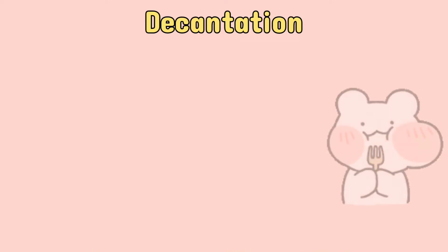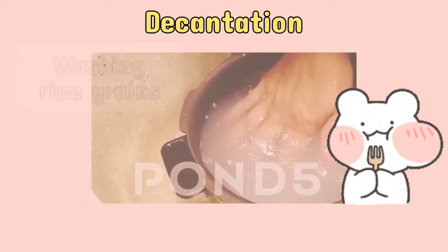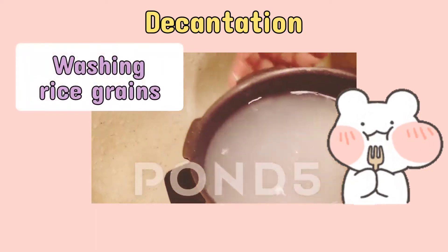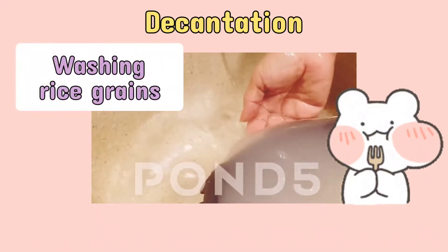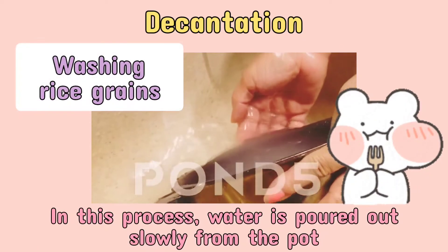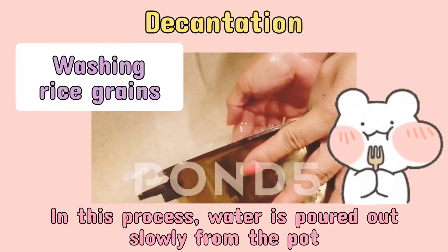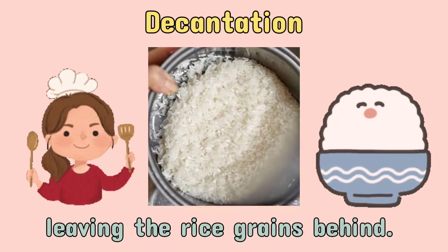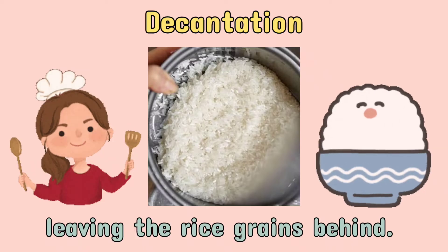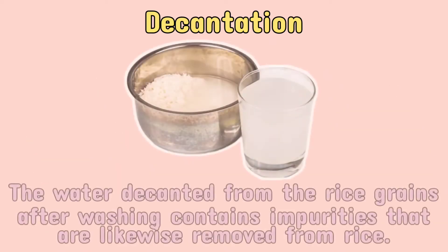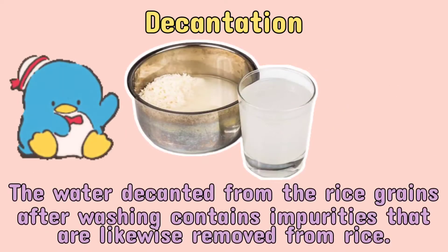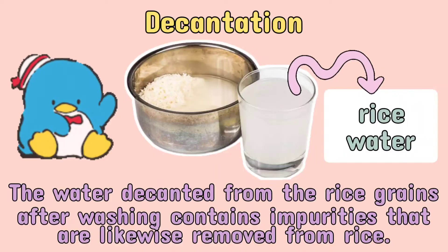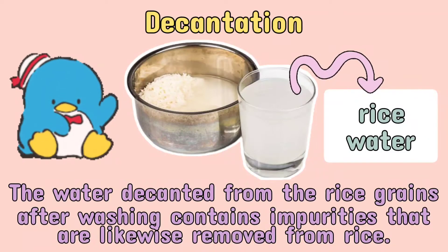Decantation is also applied when washing rice grains before cooking. In this process, water is poured out slowly from the pot, leaving the rice grains behind. The water decanted from the rice grains after washing contains impurities that are likewise removed from the rice.